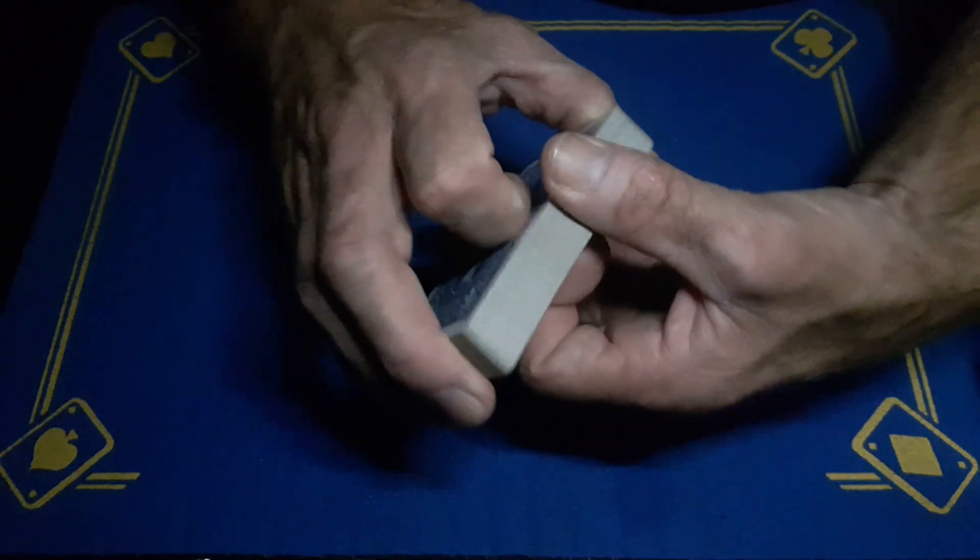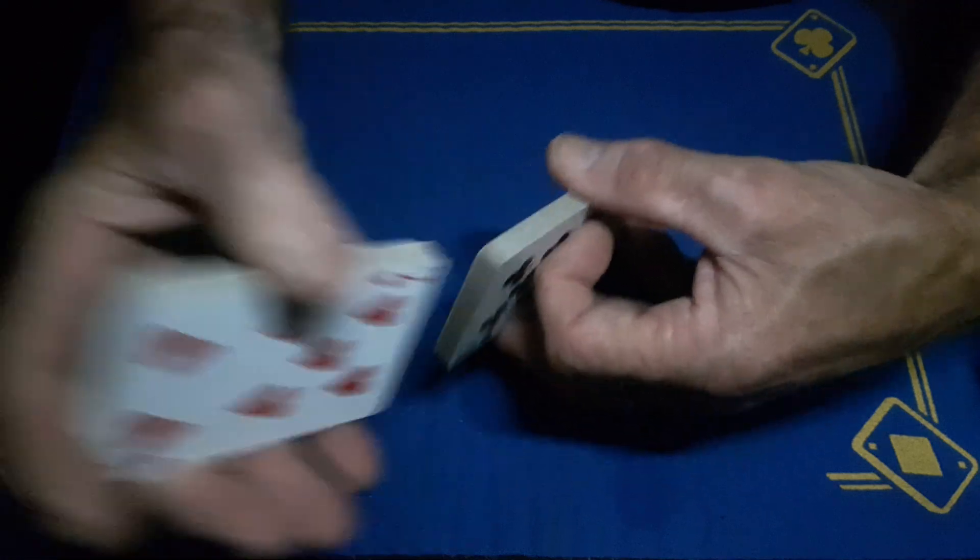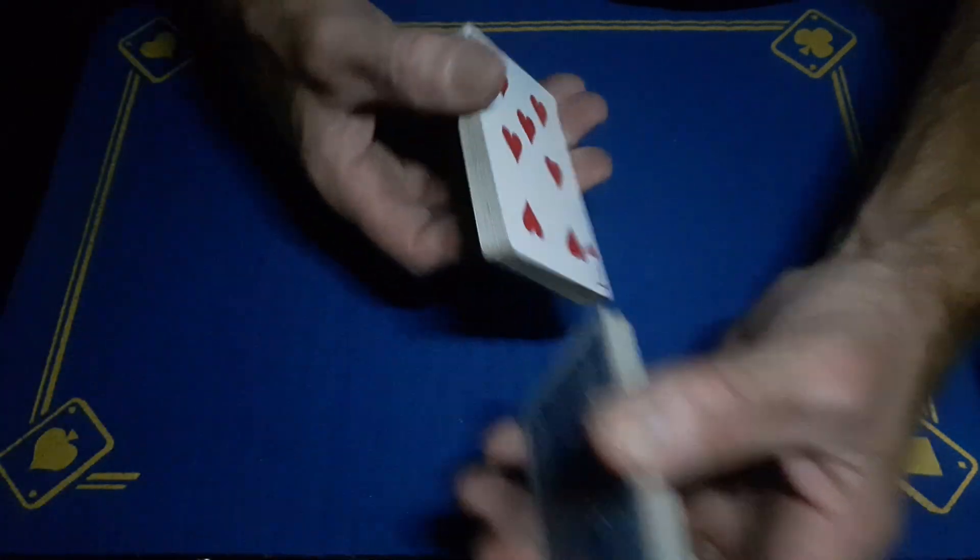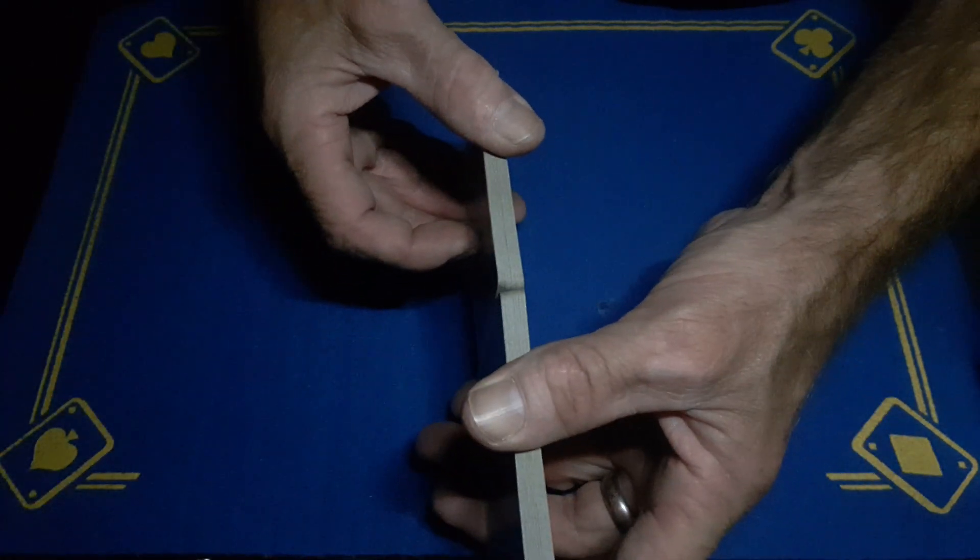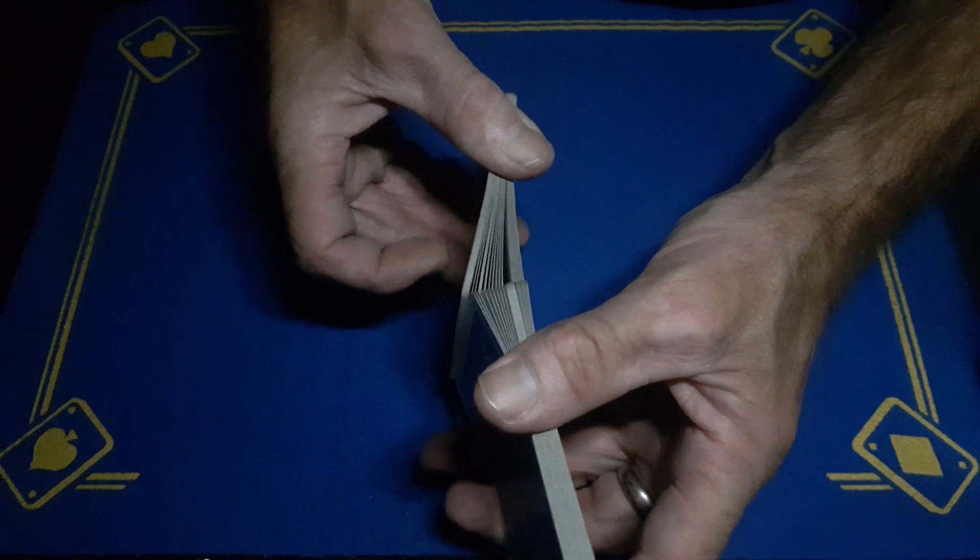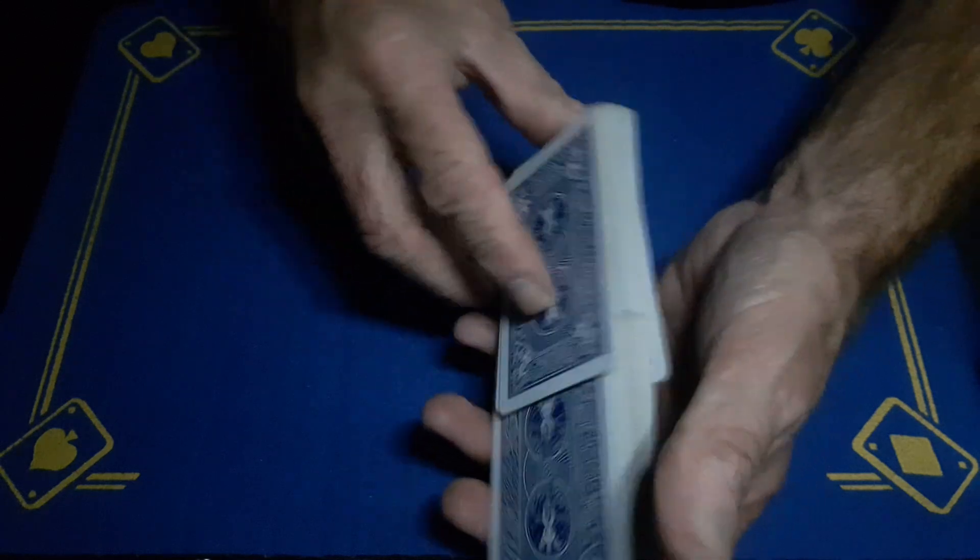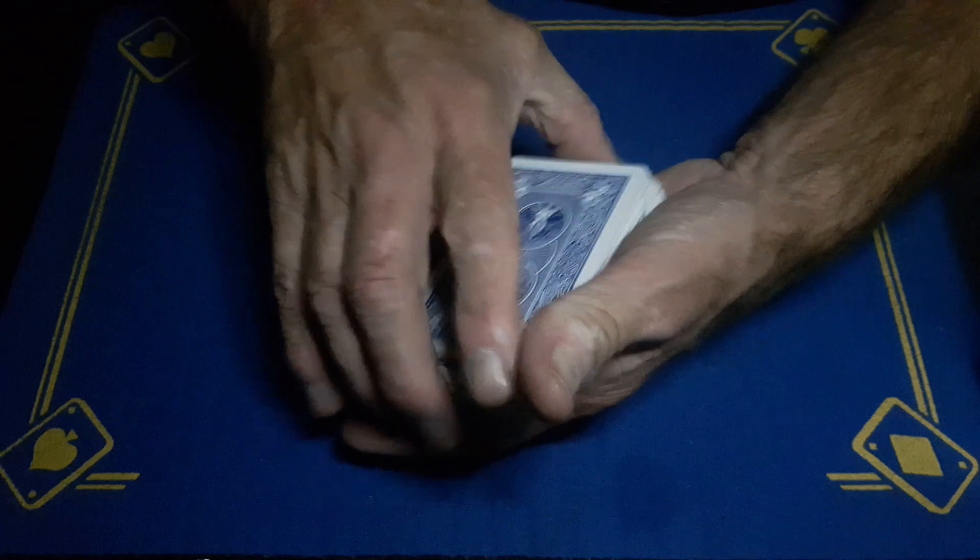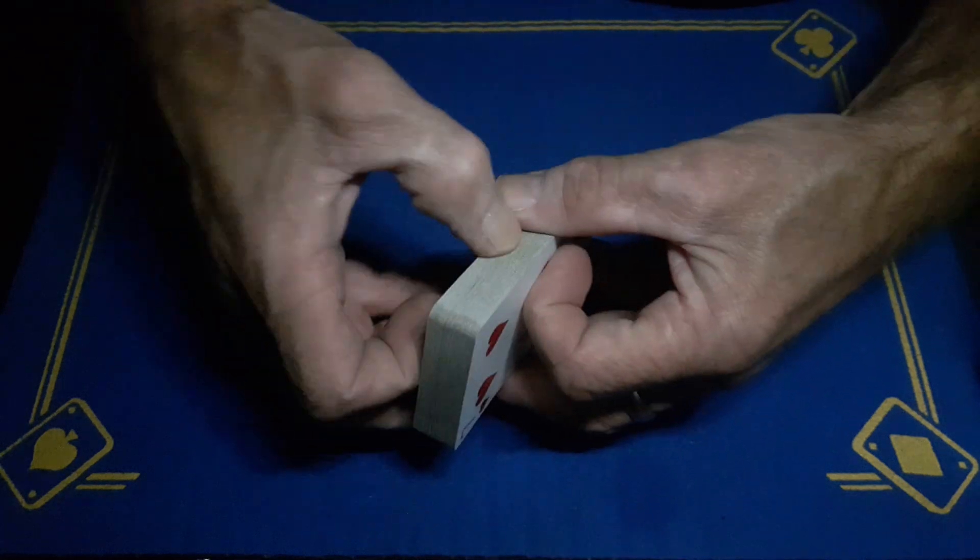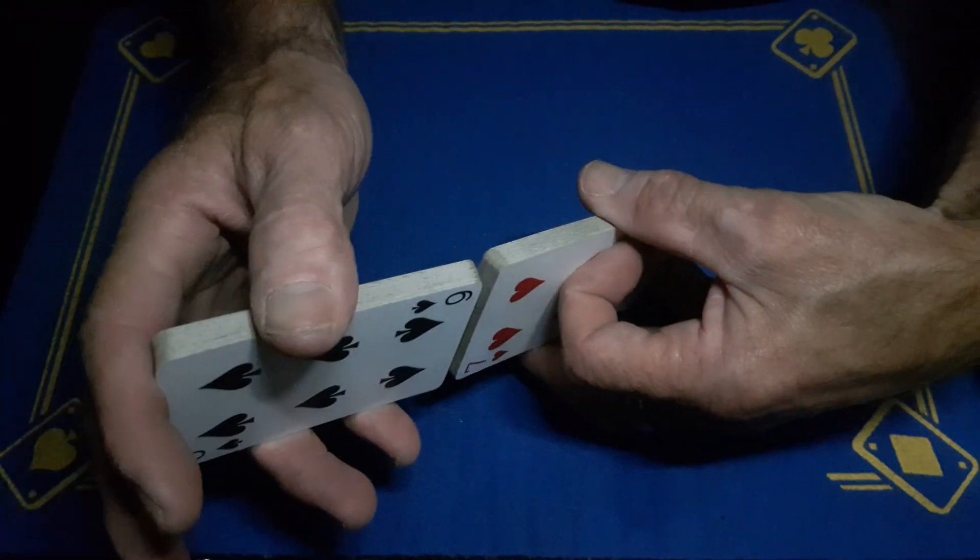A lot of people I've seen, they do Faro shuffles like they'll split this in half and they go from the bottom up. Now I can just about do it, but look how scruffy that is. That to me just feels completely alien, so I want to split it from the top and take it in from the top.